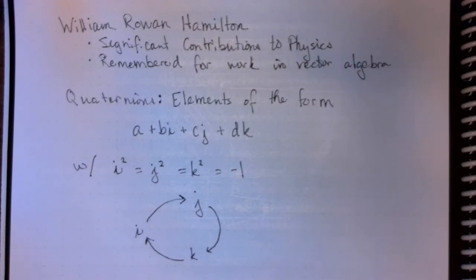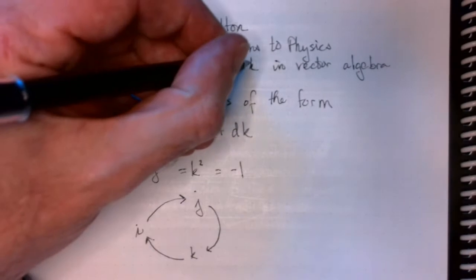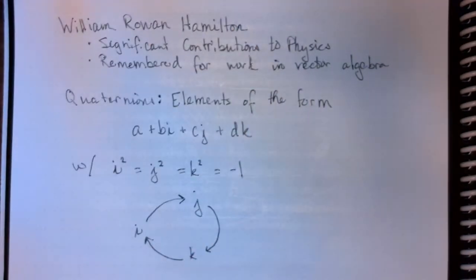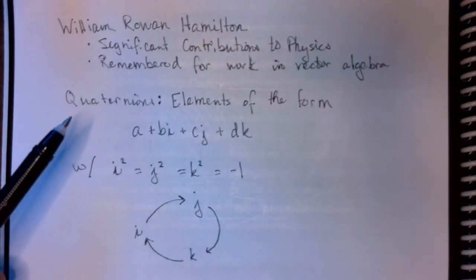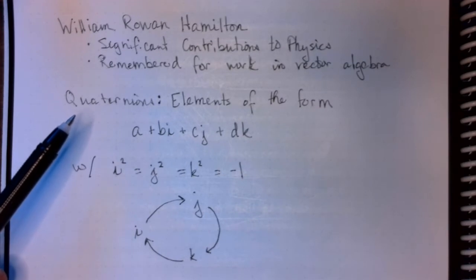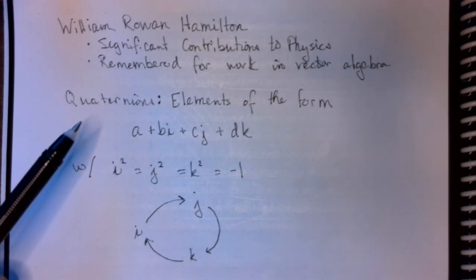So the question became, are there number systems of higher dimensions, for example, three dimensions or more? Hamilton had initially tried to create a three-dimensional number system, but he just couldn't make it work.